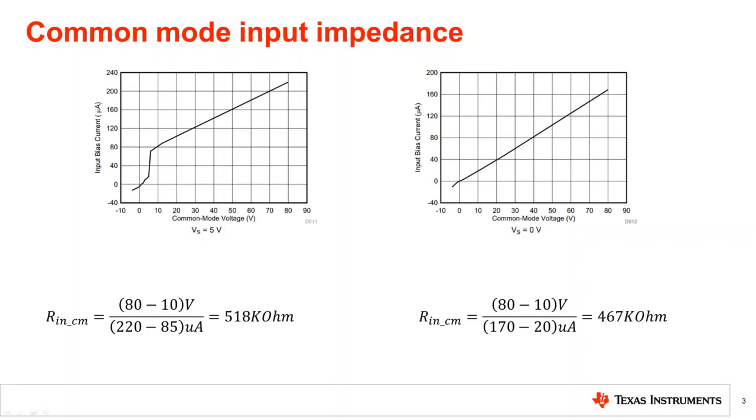In the graph on the left we can see a clear handoff when the common mode voltage transitions above or below the supply voltage of 5 volts. When the common mode voltage is lower than the supply the supply voltage powers the amplifier and the current from the input is not needed. When the common mode voltage exceeds the supply current is siphoned off to power the front end of the amplifier. Therefore the jump in IB.